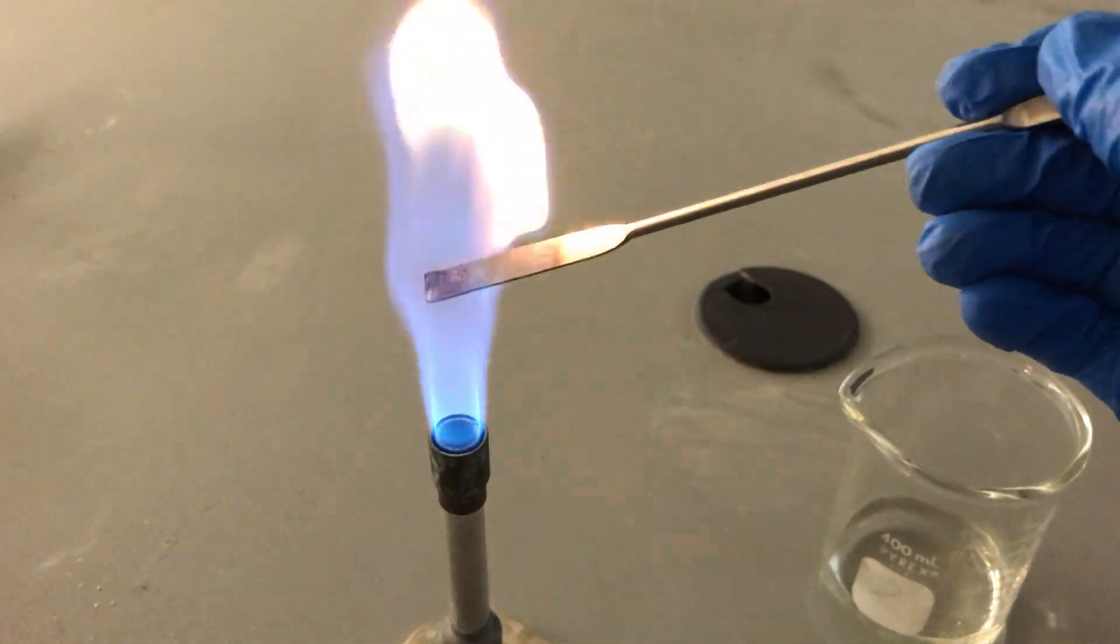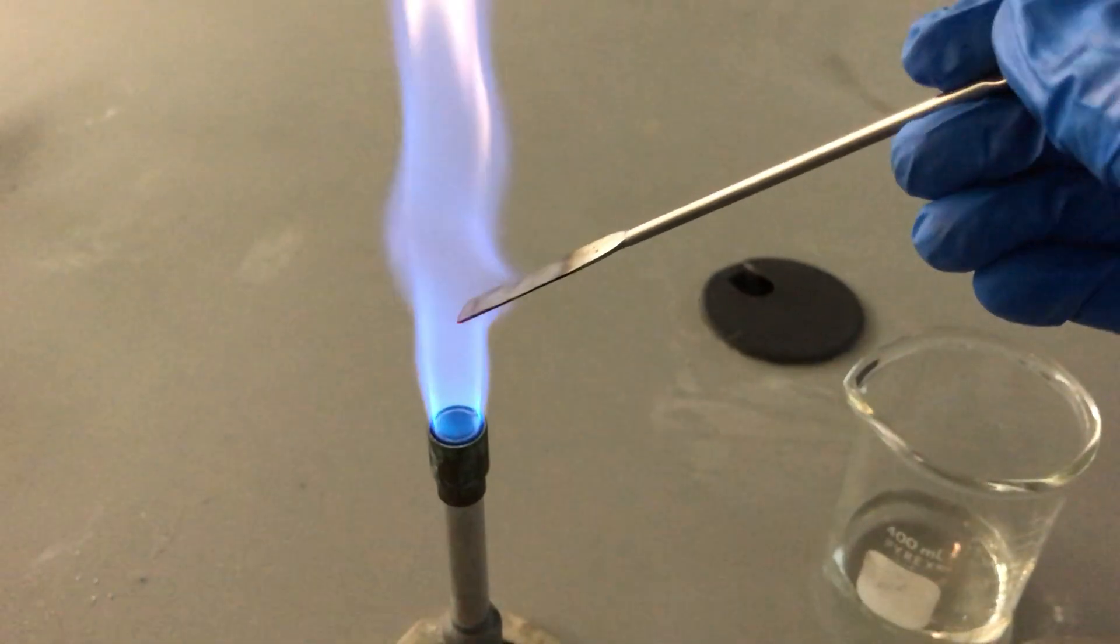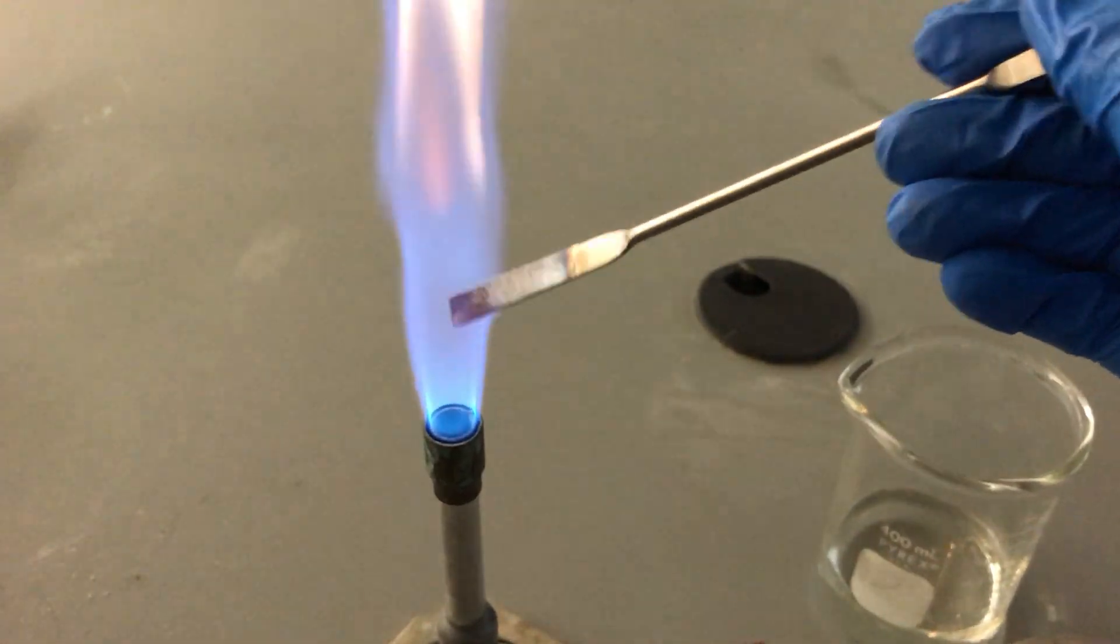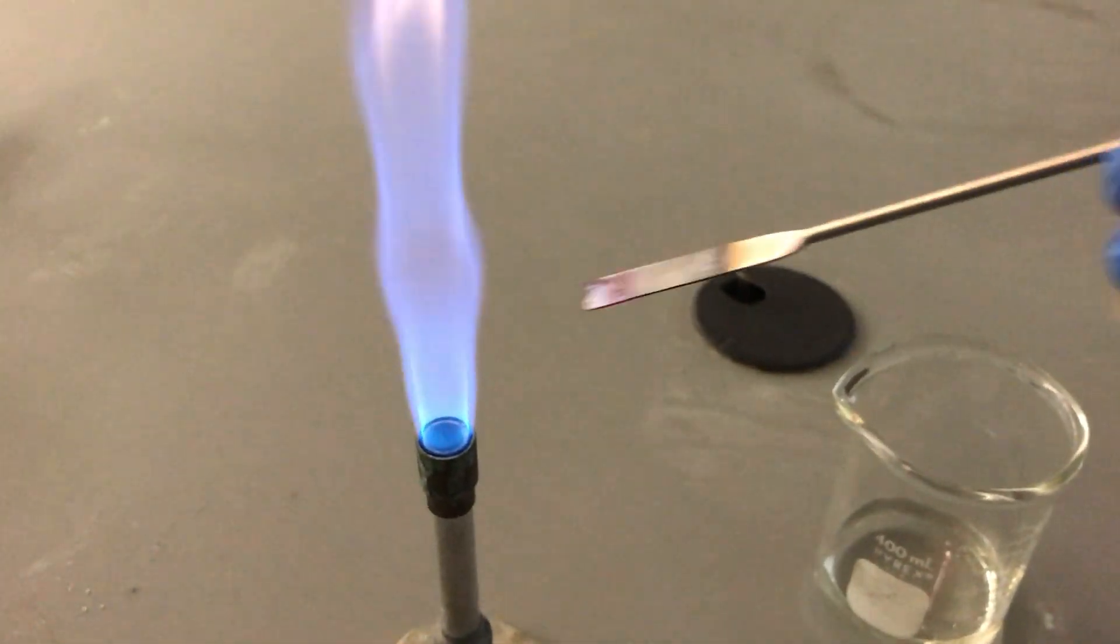So you're going to use that data, write it down on your data sheets, and then use the key in the next slide to determine what compounds are present in our sample.